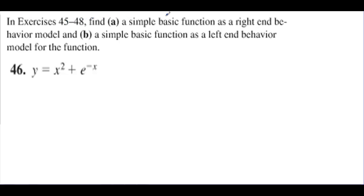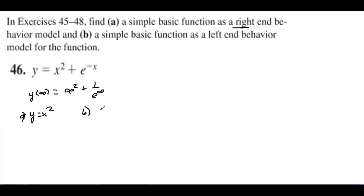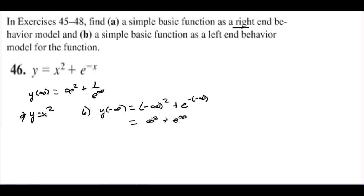In exercises 45 to 48, find a simple basic function as a right end behavior model and a left end behavior model. For the right end: y of infinity gives x squared plus 1 over e to the infinity — this goes to 0 — so the right end model is y equals x squared. For the left end: y of negative infinity gives negative infinity squared plus e to the negative negative infinity, which is infinity squared plus e to the infinity. Exponentials almost always win the race — even at x equals 10, e to the tenth is way more than 10 squared. So the left end model is y equals e to the negative x.